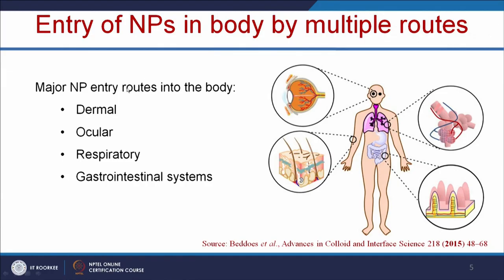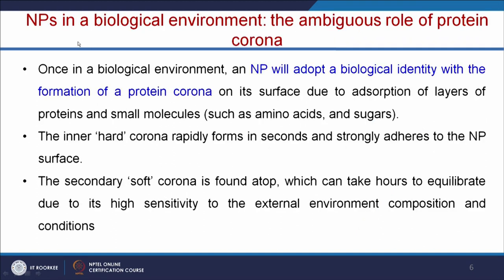Nanoparticles can enter the body through the dermal, ocular, respiratory, and gastrointestinal systems. Once in the biological environment, there will be formation of protein corona. In the biological environment, the nanoparticle adopts a biological identity with the formation of protein corona on its surface due to adsorption of layers of proteins and small molecules such as amino acids and sugars. The inner hard corona rapidly forms in seconds and is strongly attached to the nanoparticle surface, and the secondary soft corona forms atop, which can take hours to equilibrate due to its high sensitivity to external environment composition and conditions.